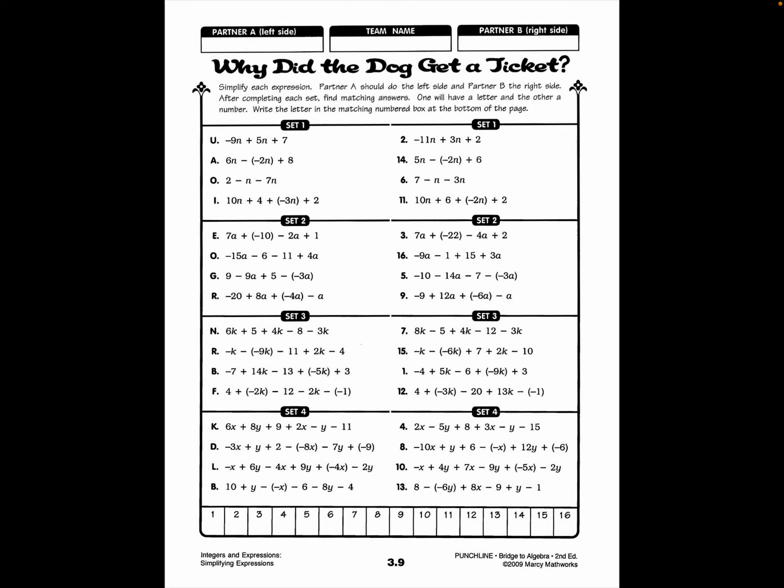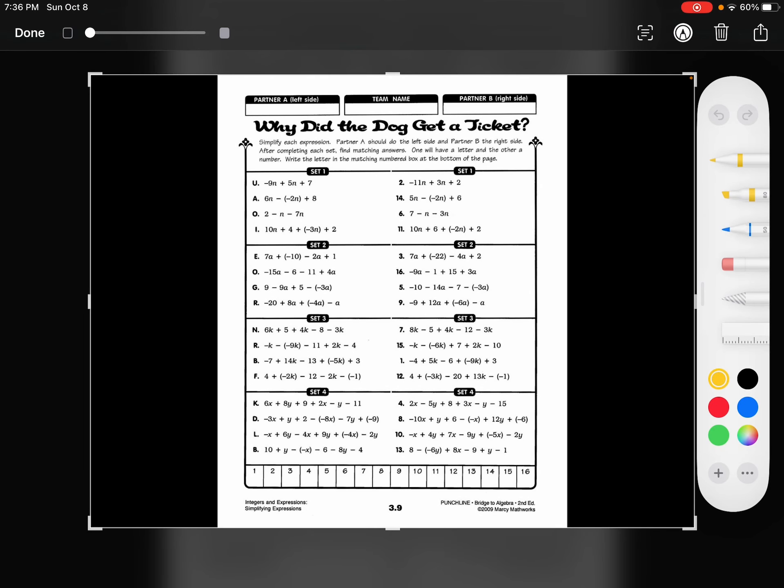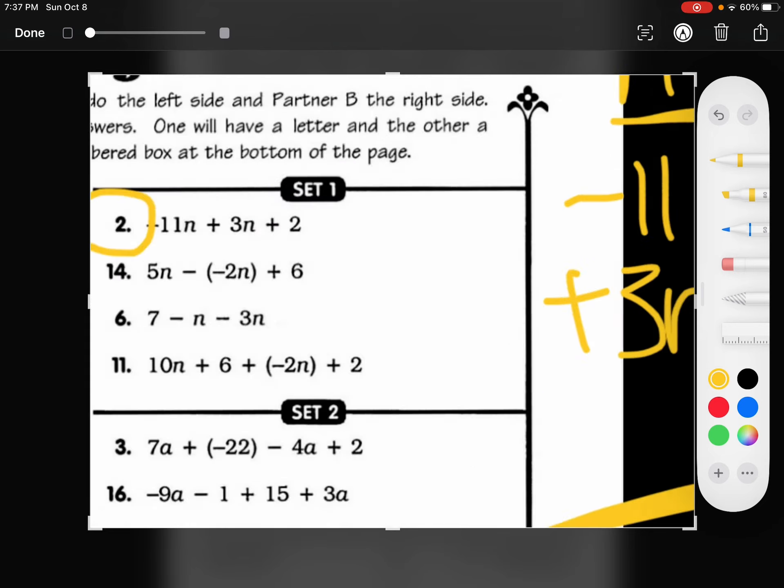Let's take a look at the second page. Again, you're going to be combining like terms, doing the exact same thing. You're making your chart. Let's start with number 2. I have n's and constants. So I have negative 11n plus 3n plus 2.